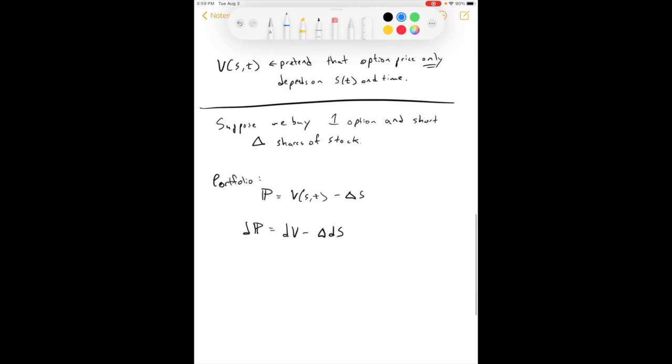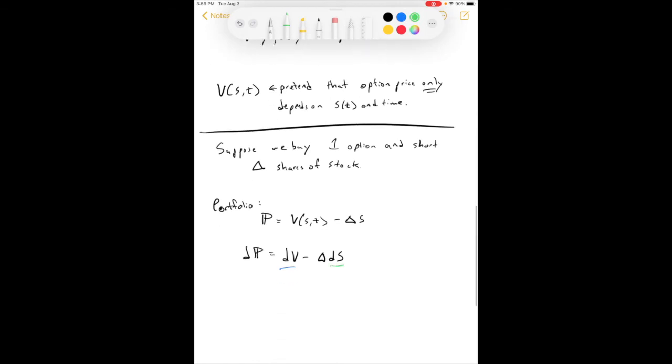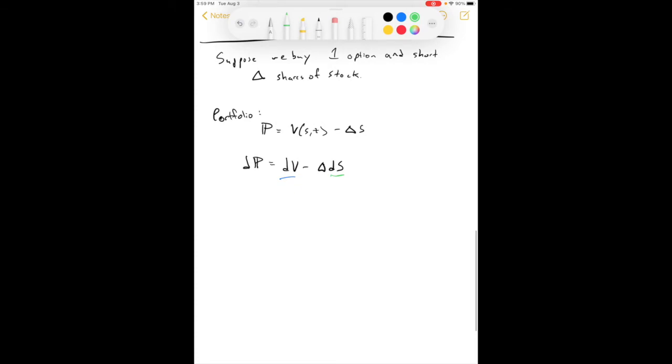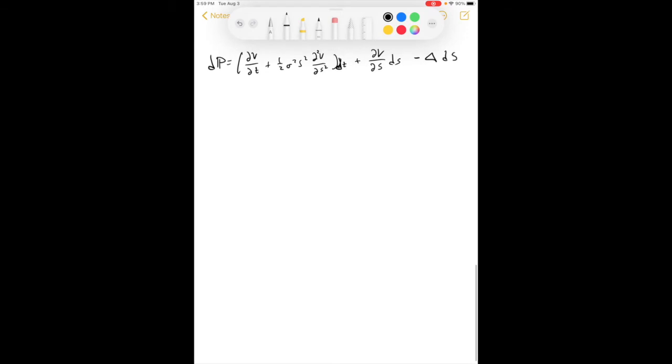So, if we can go ahead and plug in what we've got before for these, this one there and this one up here, and we can get that. The change in our portfolio value is equal to the first derivative of v with respect to t plus one-half sigma squared s squared, dt plus the first derivative with respect to s, ds, this is a d over here, minus delta ds. Alright, how are you guys feeling so far? We're about a third of the way through. It's going to be alright.